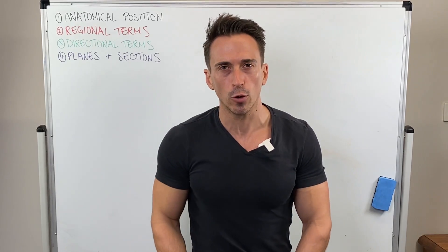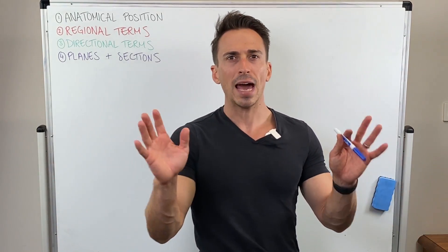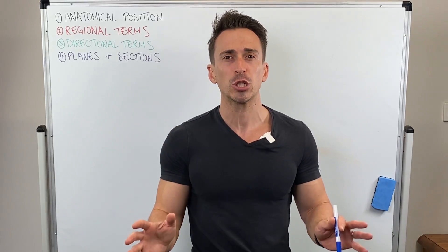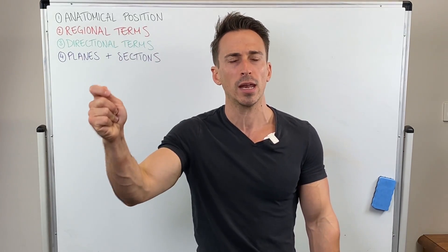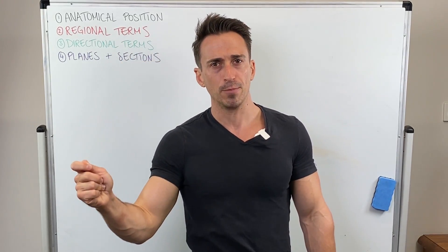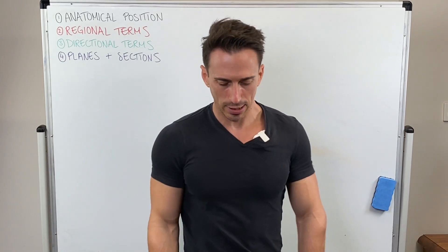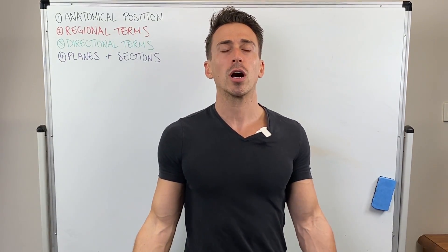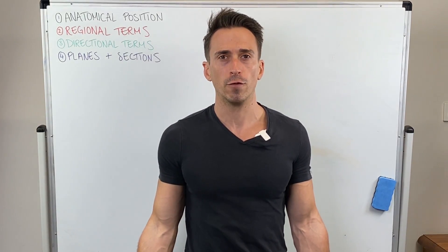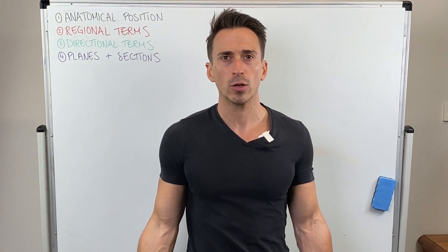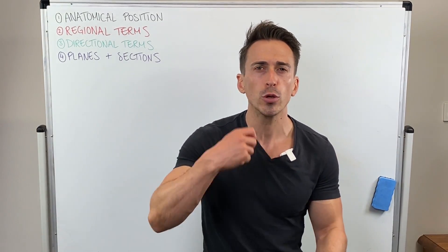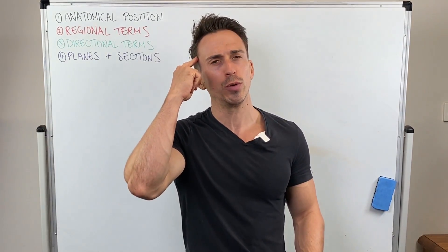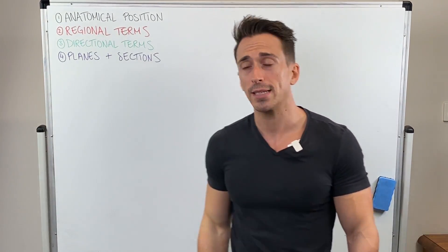So let's first start with the anatomical position. This is super simple. The anatomical position is the way that the body is positioned every time you think about explaining anatomy. The anatomical position is feet shoulder width apart, eyes facing forward, hands by your side with your palms facing forward. This is the anatomical position, and anytime you describe something regarding anatomy, this is the position you need to have in mind.